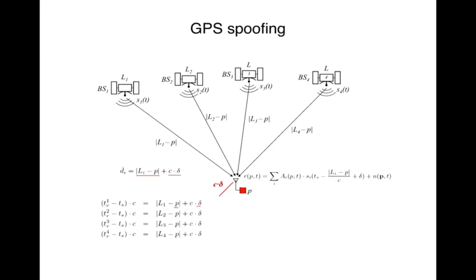The receiver calculates differences in arrival times from the satellites and uses that to determine its location — and also time, because the receiver's clock is not synchronized with the satellites. To compensate, we need at least four signals. The receiver calculates its own clock offset to the satellites, which have atomic clocks, determining not just 3D location but also time. This matters because critical systems like power grids use GPS receivers for time synchronization, and spoofing the time could throw power grids out of control.